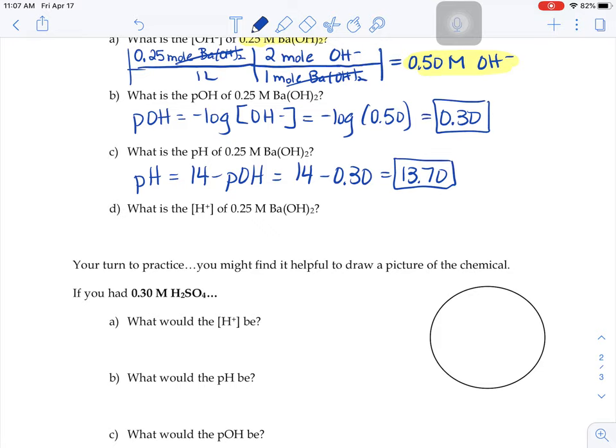Now if we want to know the H plus concentration, H plus concentration is going to equal 1 times 10 to the negative pH, right? The P in pH stands for power.